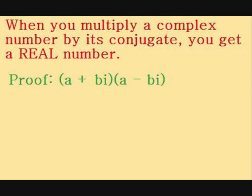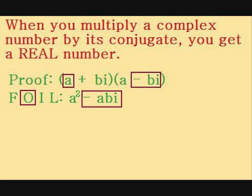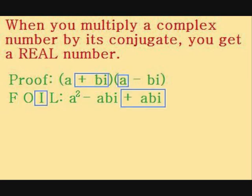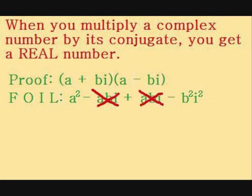Now, when we multiply them, we just need to use the same FOIL trick as before. First, a times a equals a squared. Outside, a times minus bi equals minus abi. Inside, a times bi equals abi. Last, bi times minus bi equals minus b squared i squared. Now, the minus abi and plus abi in the middle just cancel out, so we can get rid of them. Also, since i squared equals minus one, minus b squared i squared equals minus b squared times minus one equals b squared.